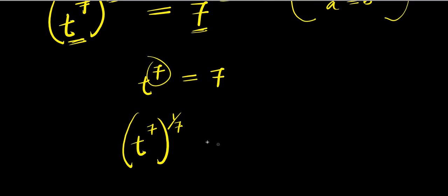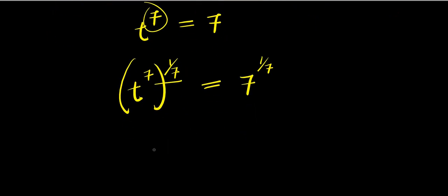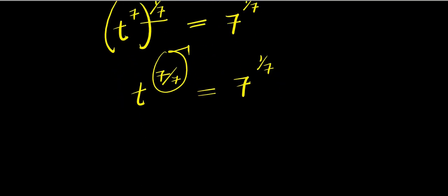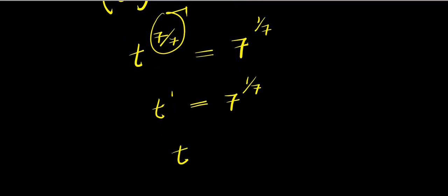I can then solve for t by eliminating the seven. I raise t^7 to the power of one over seven, and do the same on the right side. Multiplying the exponents gives t to the power of seven over seven, which equals seven to the power of one over seven. Since seven over seven is one, this means t to the power of one equals seven to the power of one over seven, so t equals seven to the power of one over seven.